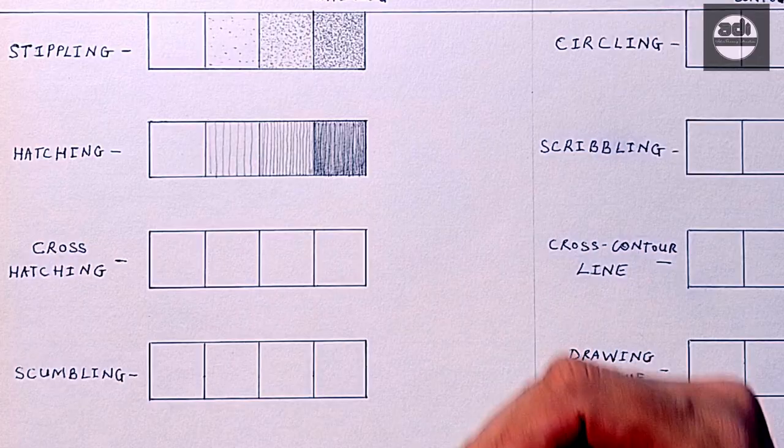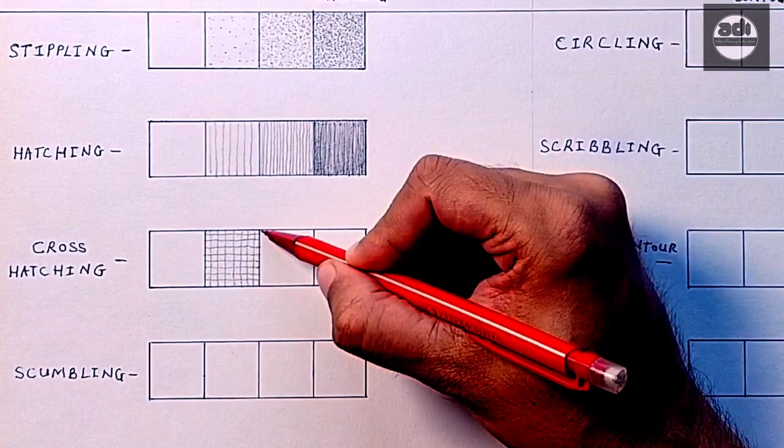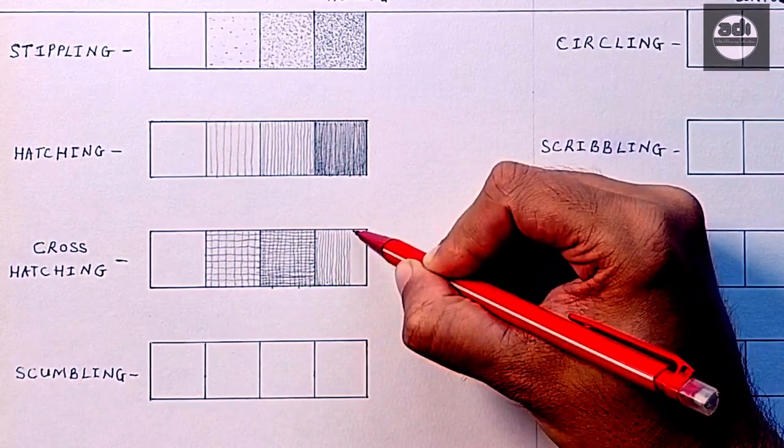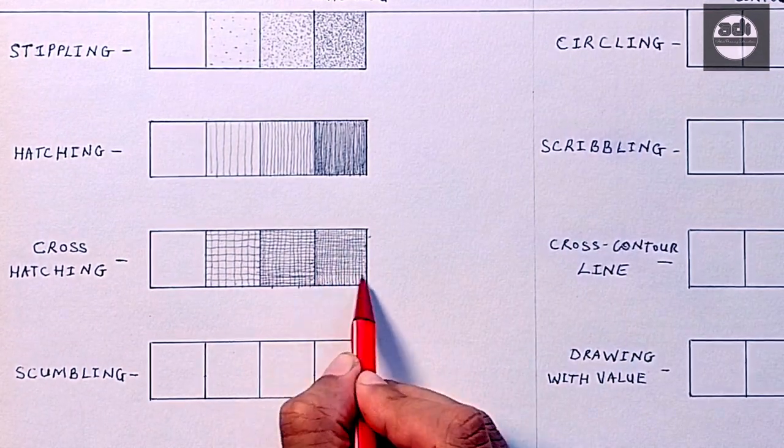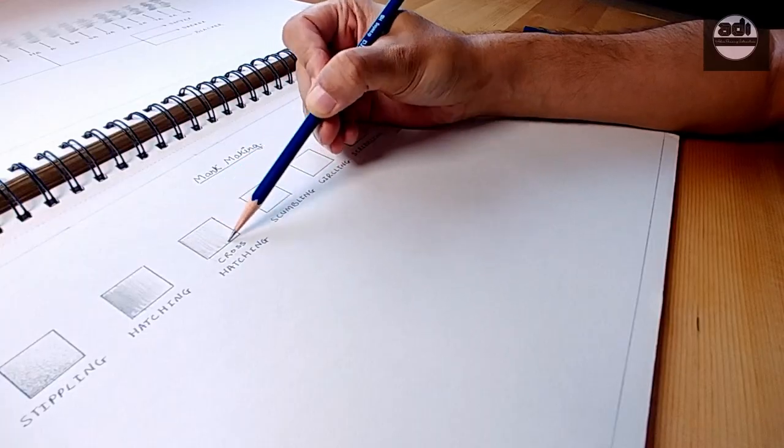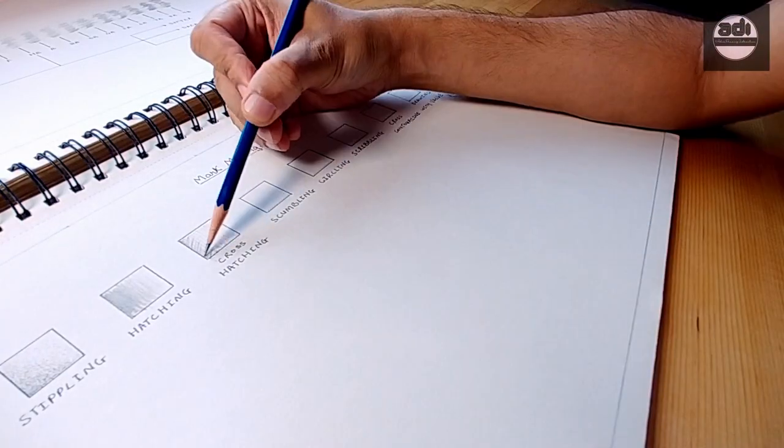Cross hatching is a mark making technique where parallel intersecting lines are used to represent value. A range of values is achieved by varying the length, angle, closeness, thickness, and other properties of the lines you draw and by layering the lines. The denser the lines, the darker the values you get.